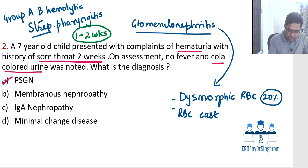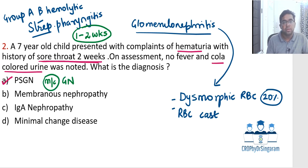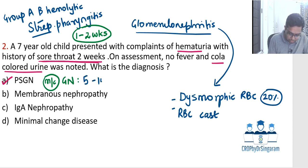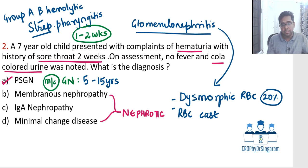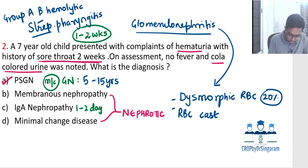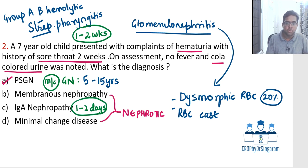Following streptococcal pharyngitis, one to two weeks later the child presents with glomerulonephritis — this is called post-streptococcal glomerulonephritis (PSGN). PSGN is the most common condition associated with glomerulonephritis in children. The typical age group is school-going children, 5 to 15 years. Membranous nephropathy and minimal change disease are associated with nephrotic syndrome, not glomerulonephritis. IgA nephropathy is associated with hematuria following respiratory infection, but it occurs within one to two days — not one to two weeks. So the answer is clearly post-streptococcal glomerulonephritis.